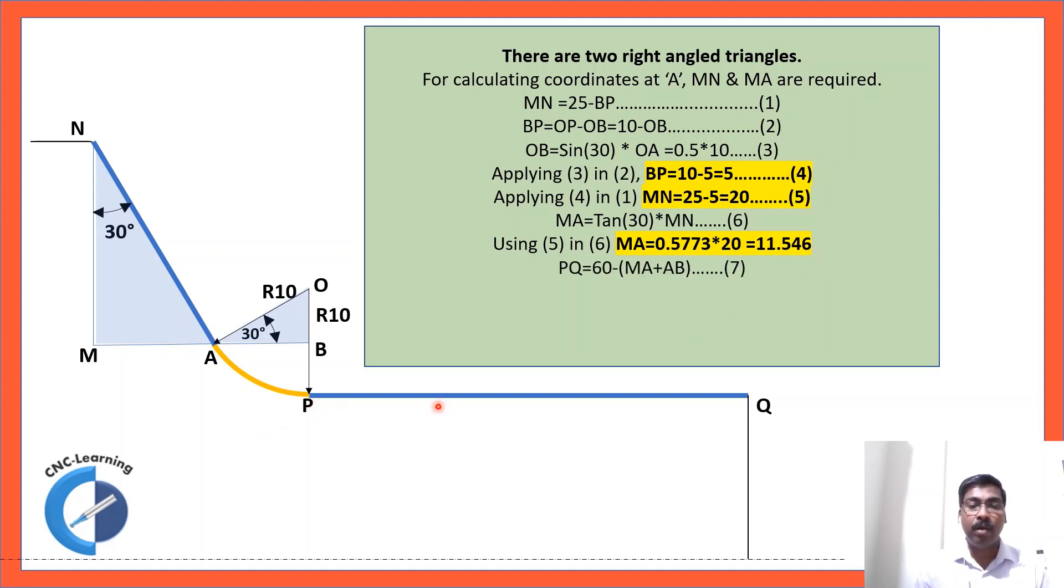Now, MN we have already calculated here which is 20. So, this 20 if you apply here, MA equals Tan 30 is 0.5773 multiplied by 20 equals 11.546. Now, we need to calculate PQ. PQ is 60 minus. So, 60 is already given in the drawing this point to this point. The total distance 60 minus MA plus AB.